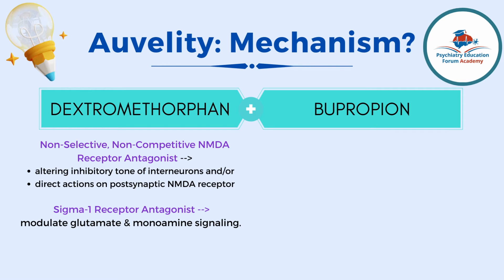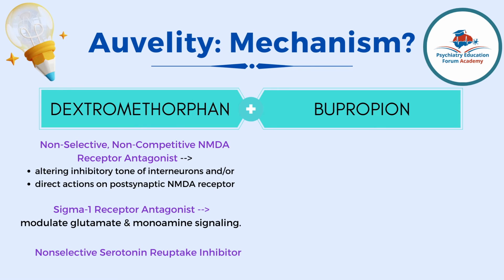One important point: because dextromethorphan also works on the serotonin system via sigma-1, we need to be mindful of the risk of serotonin syndrome when combining this medication with other agents that have serotonergic properties, or when giving higher doses. The second mechanism is sigma-1 receptor antagonism, and higher dosing of dextromethorphan appears to be required for this effect. The third mechanism is that dextromethorphan is a non-selective serotonin reuptake inhibitor. There are thus two mechanisms that increase serotonin, so caution regarding serotonin syndrome risk is warranted at higher doses or when other medications are added.